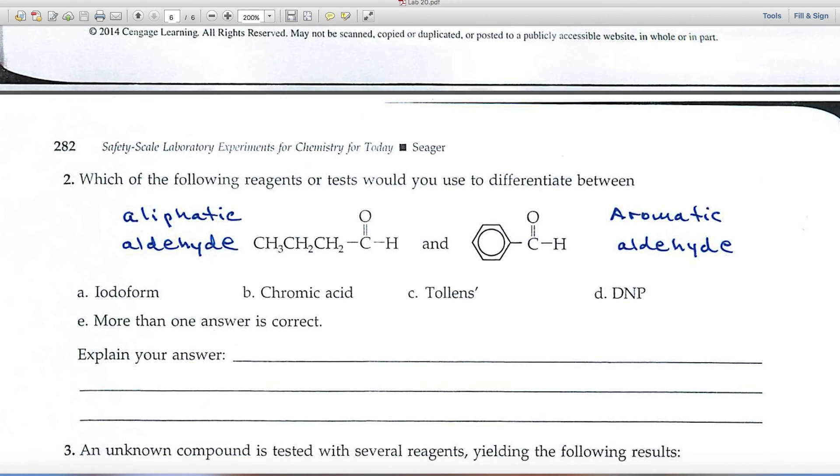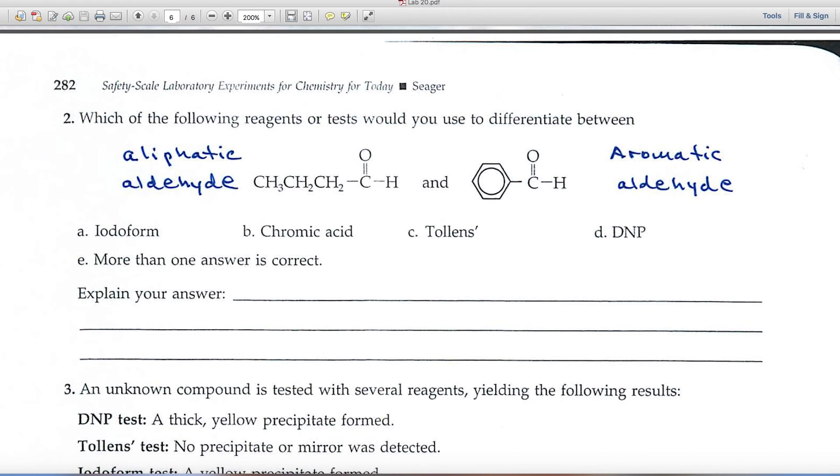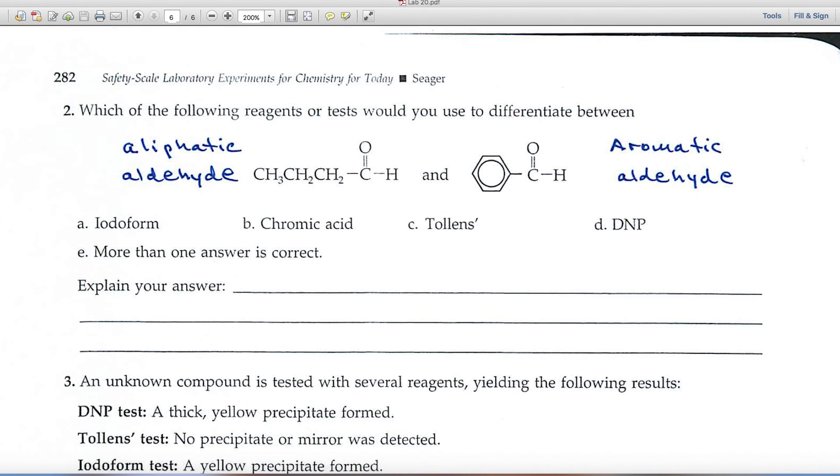Number two, both of these are aldehydes. The one on the left is an aliphatic aldehyde. The one on the right is an aromatic aldehyde. So the question you have is, which of those tests would differentiate between the two, an aliphatic and an aromatic aldehyde.